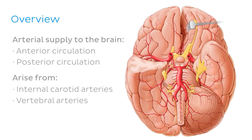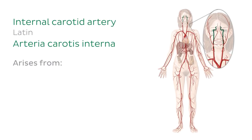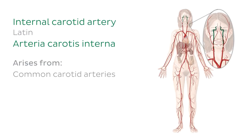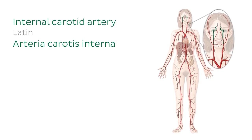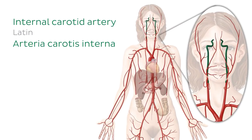So we'll kickstart this tutorial with the anterior circulation of the brain, which of course starts with the internal carotid arteries. The internal carotid arteries arise in the neck from the common carotid arteries, and we can see them in situ in our lovely lady here. They then travel superiorly to the base of the skull and enter the cranial cavity through the carotid canals in the temporal bones.